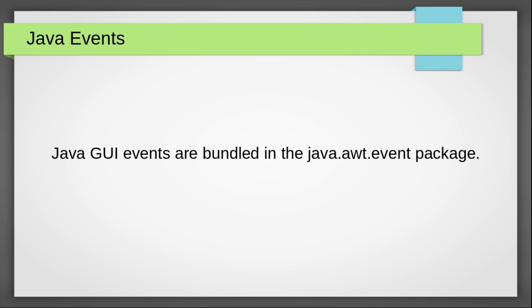Java GUI events are bundled in the java.awt.event package. This was the same awt event package that was used by the Abstract Windowing Toolkit back then. The first generation of graphical user interface for Java was AWT.